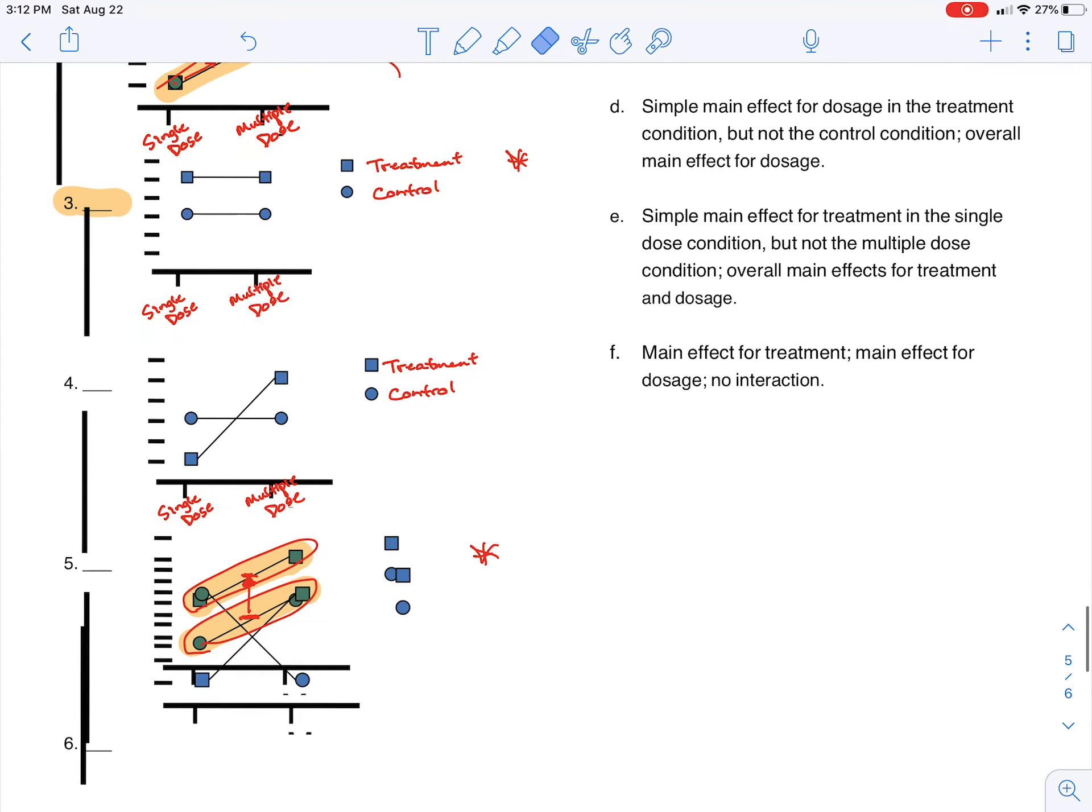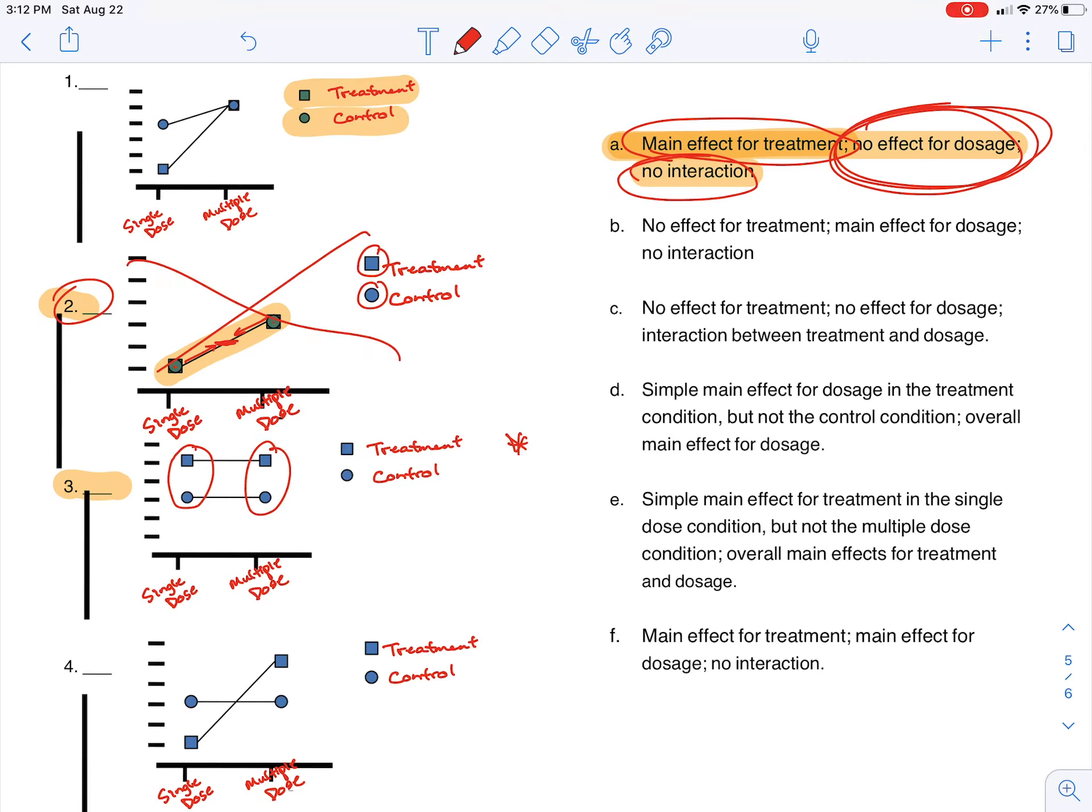What we want to know for dosage is, on average, are these single doses any different from the multiple doses? Okay. So what we want to do is take the average of the single doses and the average of the multiple doses. And what we find is they are equal. We don't go up at all from single dose to multiple dose. So indeed, here we have no effect for dosage.